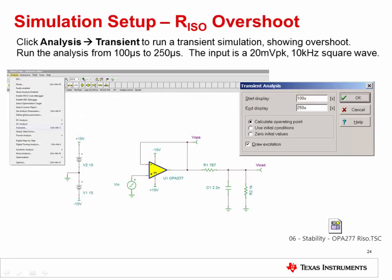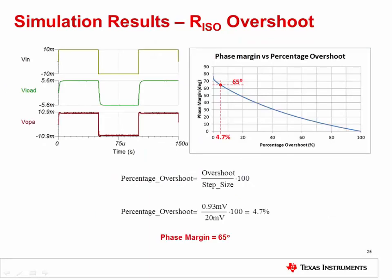Let's now simulate the transient overshoot with RISO included in the circuit. As before, click Analysis, then Transient to run the simulation. Run the analysis from 100 microseconds to 250 microseconds. The input is a 20 millivolts peak, 10 kilohertz square wave. You should see results similar to this. With RISO added to the circuit, the overshoot was reduced to only 4.7%. This results in a phase margin of 65 degrees, indicating a stable circuit.